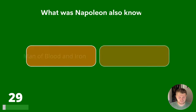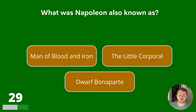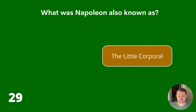Question 29. What was Napoleon also known as? Man of Blood and Iron, The Little Corporal or Dwarf Bonaparte? The answer is The Little Corporal.